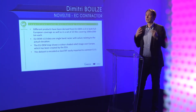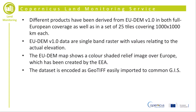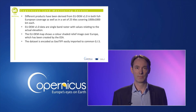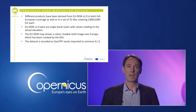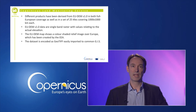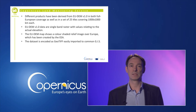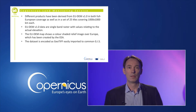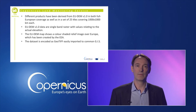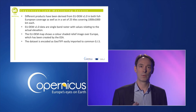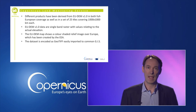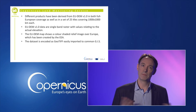Now let's see which digital elevation model areas are available for Copernicus. CLMS provides different products derived from the EU DEM version 1.0 in full European coverage — a set of 25 tiles covering 1,000 by 1,000 km each. The European digital elevation model version 1.0 map shows a color-shaded relief image over Europe created by EEA. The downloadable data are single band raster with values relating to actual elevation, encoded as a GeoTIFF with LZW or deflate compression mode tiles.